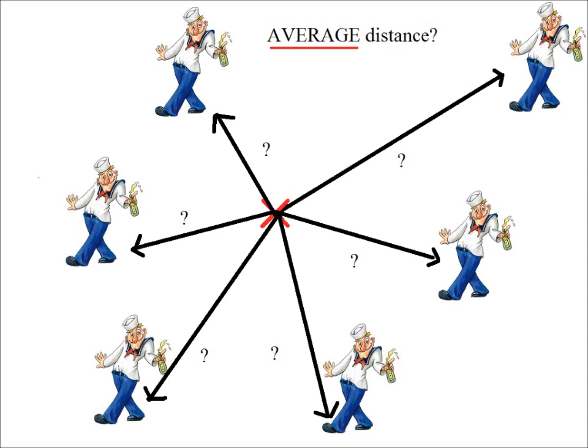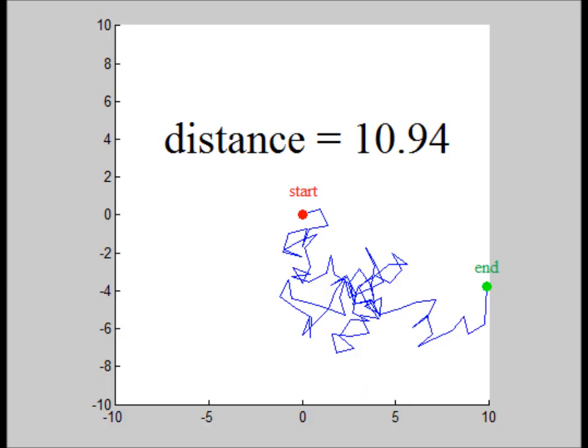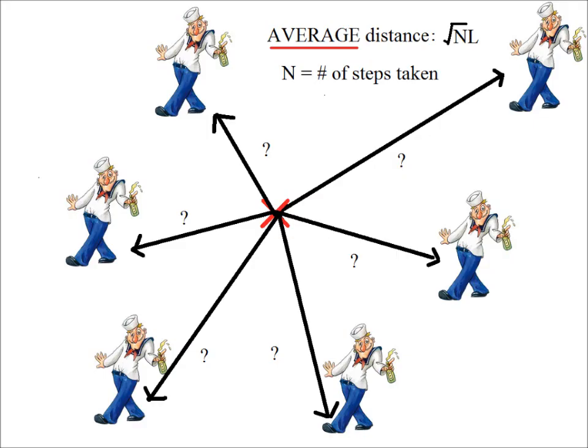For our sailor who took 100 steps, he will on average end up a distance 10 times L away from his starting point. In general, after he takes N steps, he will end up a distance square root of N times L away. Again, this is only an average, not a guarantee. In these sample trajectories done by Leroy, you can see that there is quite a bit of diversity in the start-to-end distance. Since a Brownian motion is essentially just a continuous random walk, we should expect a similar-looking formula to describe the average drift distance.